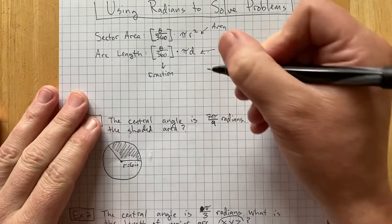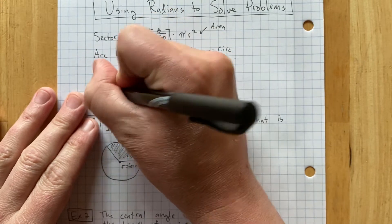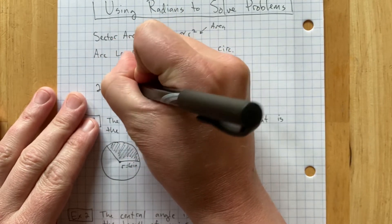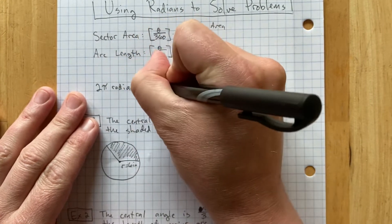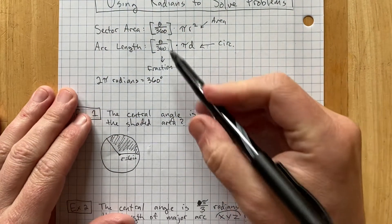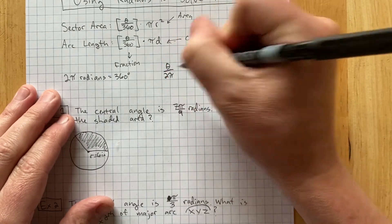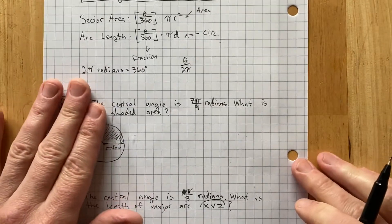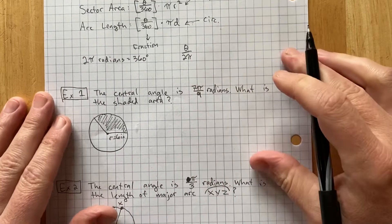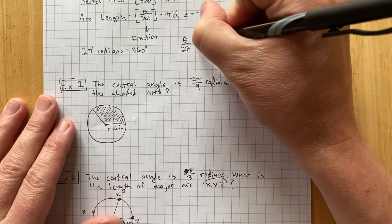But now we're using radians. Remember that there are 2 pi radians in 360 degrees. Those two things are equivalent. And so instead of theta over 360, we're going to start to use theta over 2 pi. That's what we're going to do. But dividing by 2 pi can get a little tricky.